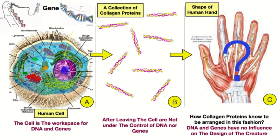These collagen proteins are no longer under the control of genes and DNA. So the big question is: how do these millions and millions of proteins know to arrange themselves in the perfect order of the human hand? As you can see on the right, the answer is that this is not under the control of genes and DNA — the shaping of the collagen molecules into the shape of the human hand — because, as I said, genes and DNA can only work within the cell.